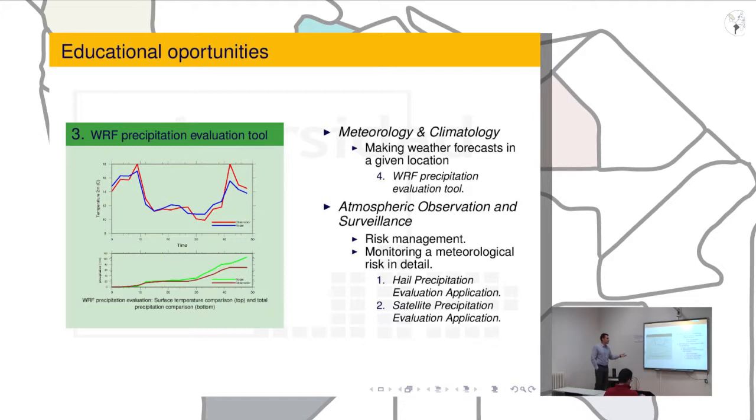In another subject, such as atmospheric observation and surveillance, they have to learn to deal with risk management and monitor meteorological risks in real time. And the group has realized that the applications they have developed are useful in order to do a real-time monitoring. For example, the application to evaluate precipitation to get a precipitation estimate is useful to detect several storms in the region in real-time. It's especially useful if you can compare it with observation systems.